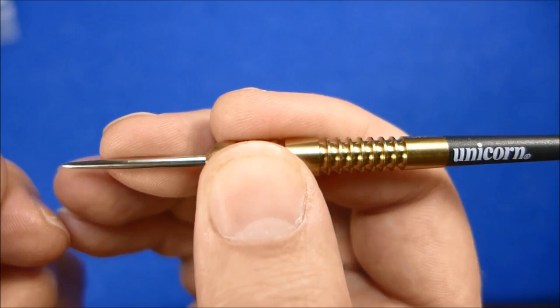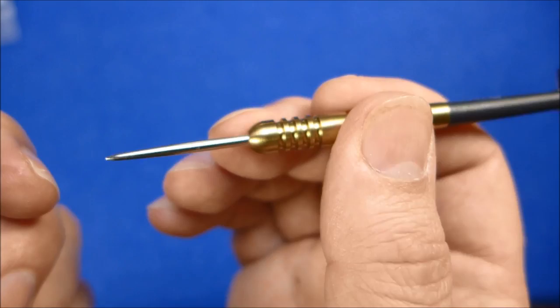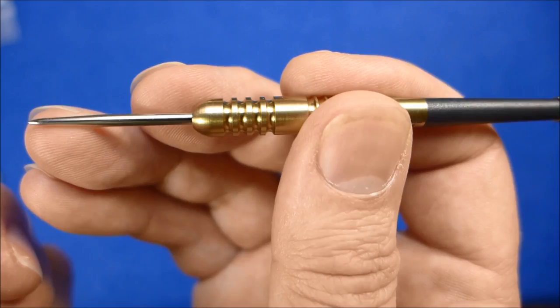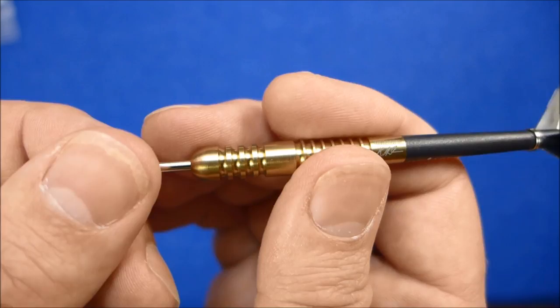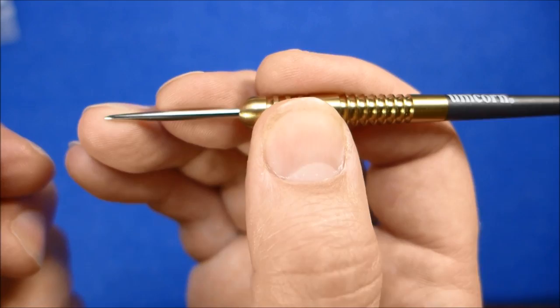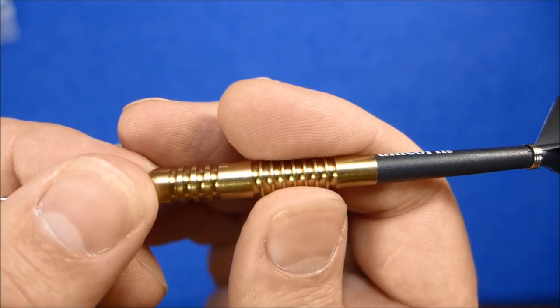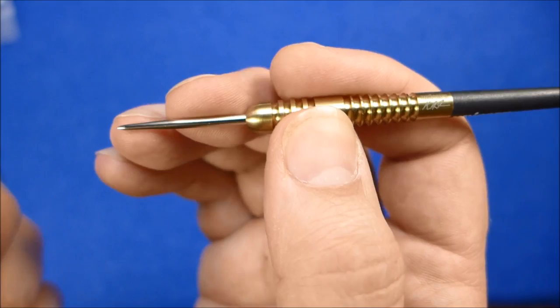It feels comfortable holding it at the rear there, maybe because of the way the taper of the barrel is, seems to sit quite nice on my grip. But I'm probably going to be gripping it around here, but I will try it there because it's not an especially long barrel so it doesn't feel too awkward for me gripping it there, but I'm naturally a front gripper.